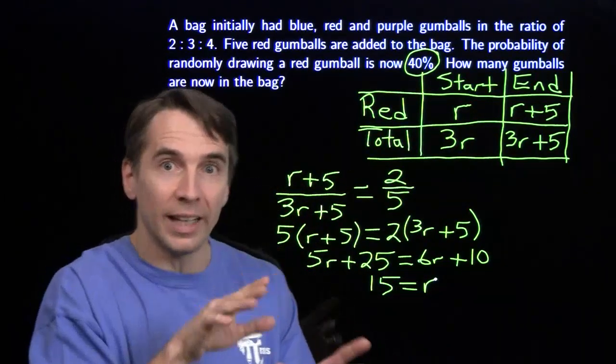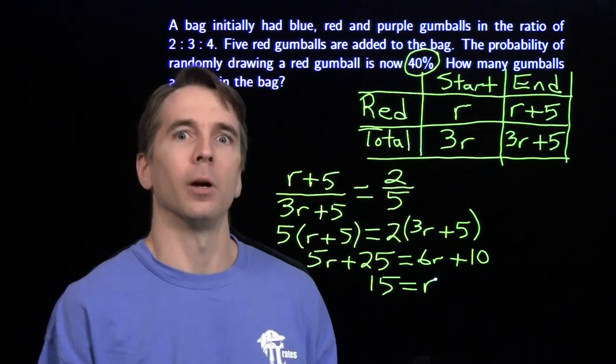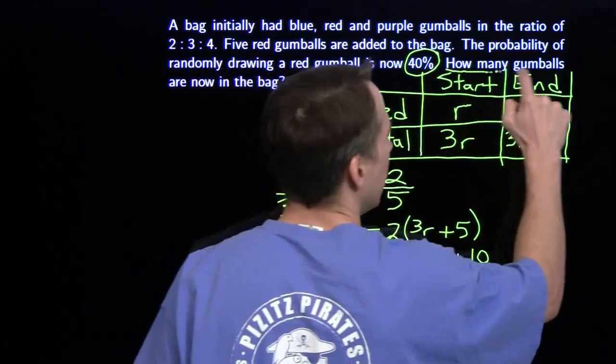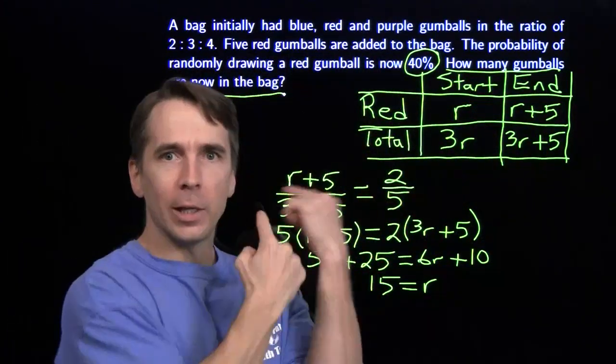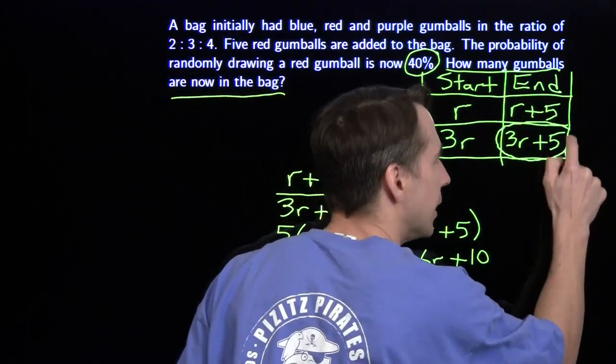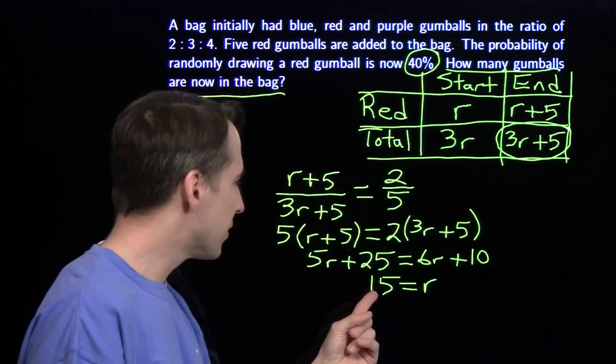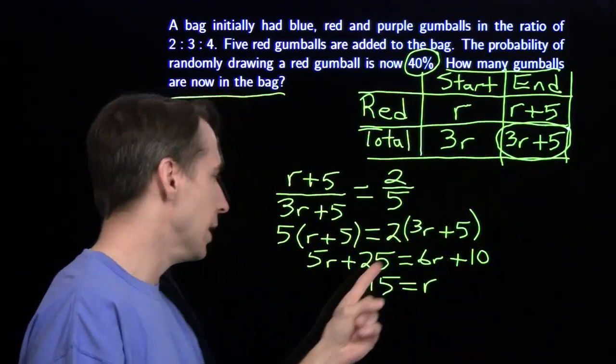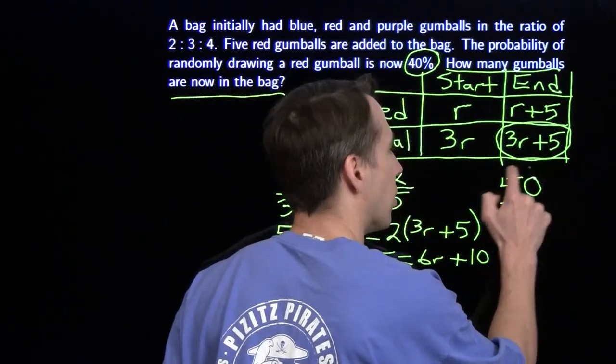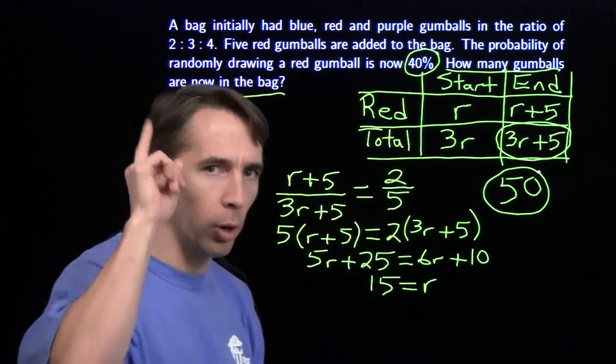It's really tempting to just write down 15 and race on to the next problem, but then we'll get the answer wrong. The key last thing you have to do with every single word problem is read the question again. They're asking for the total number of gumballs at the end. We found r, but they're asking for 3r + 5. We take r equals 15, stick it in this expression: 3 times 15 is 45, add 5, we get 50. The key step at the end is reading the question one more time.